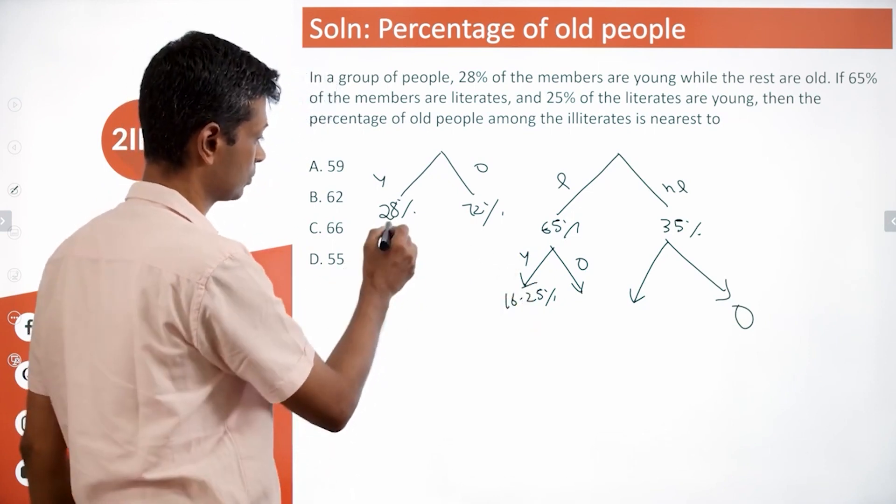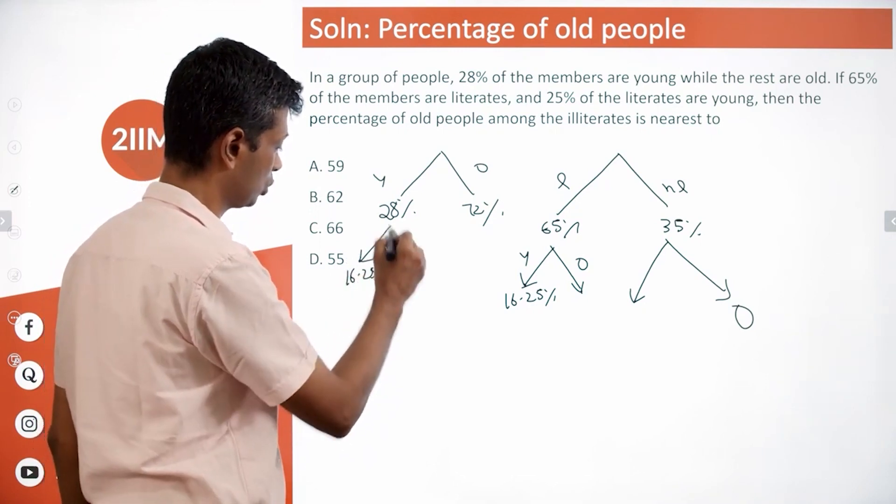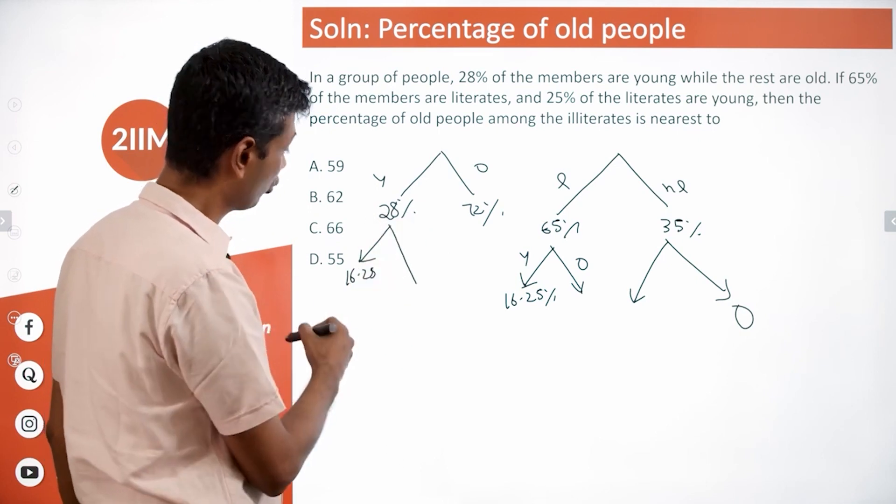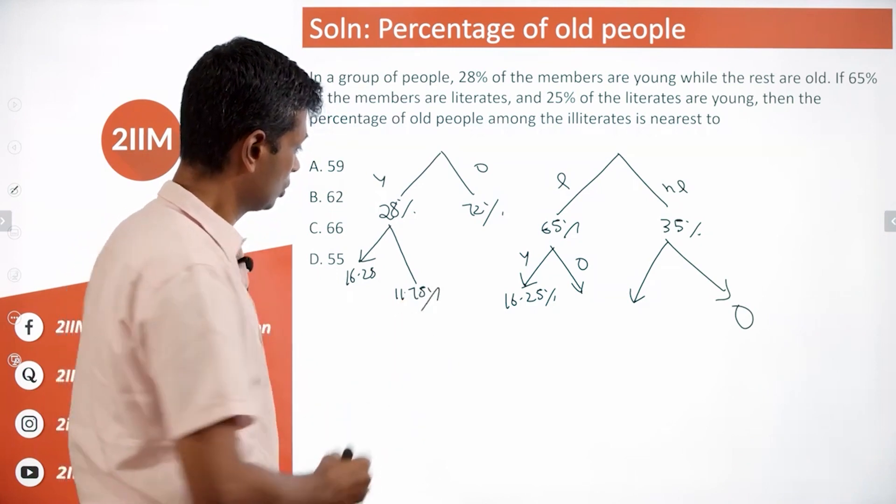16.25 percent are literate, so not literate would be the remaining. 28 minus 16 is 12, this is 11.75. So out of 28 percent, 16.25 percent are literate, 11.75 are not literate.